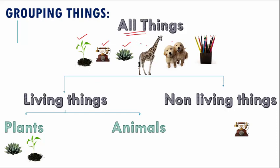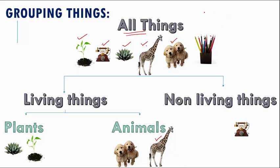Finally we come to the giraffe — is it a plant, an animal, or a non-living thing? It is an animal, so let us put it under animals. Now let's move on to the cute little puppies — are they living or non-living? They are living and they will come under animals. Lastly, what about this pencil stand? Do you see it growing, reproducing, or breathing? No — so it is a non-living thing. Let us categorize the pencil stand into non-living things.